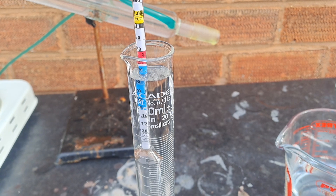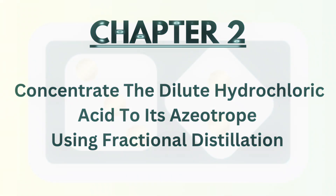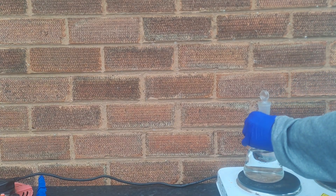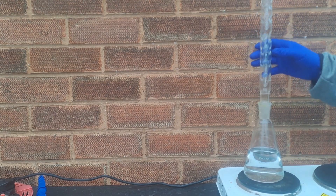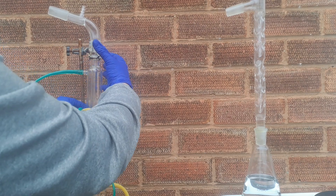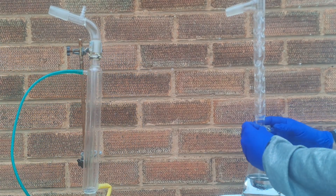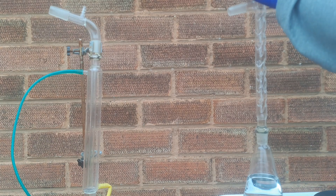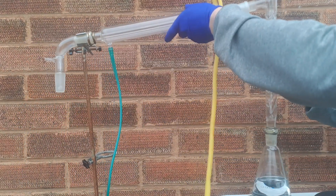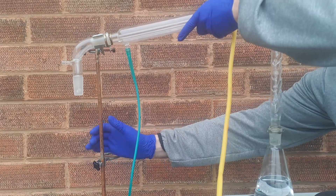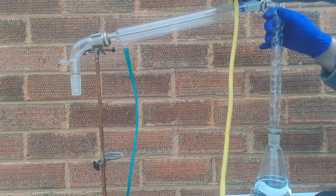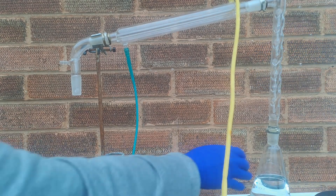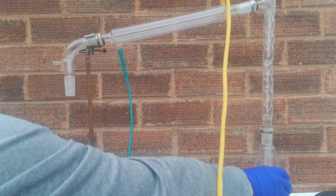Now we know the concentration of the acid, it's time to remove as much of the water as possible using fractional distillation. 11% hydrochloric acid does have its uses — it is great for cleaning glassware, especially inside conical flasks and round bottom flasks, or anywhere you can't get a scrubbing utensil. So even if you are able to buy concentrated hydrochloric acid, it might be worth doing this and keeping the acid for cleaning. However, I want concentrated hydrochloric acid, so the next step for me is to remove the excess water from the acid and bring it to its azeotrope of 20.2%. For this, I need to set up for fractional distillation.